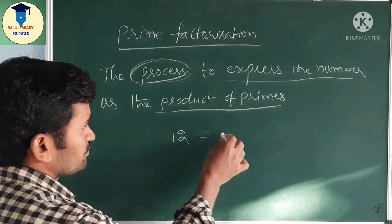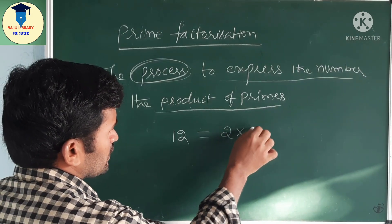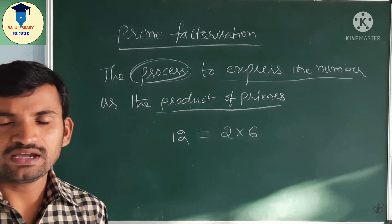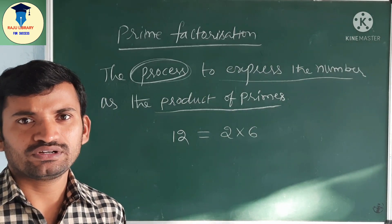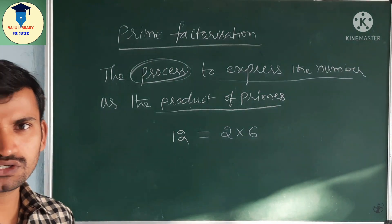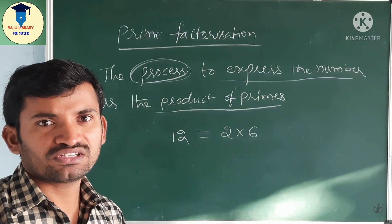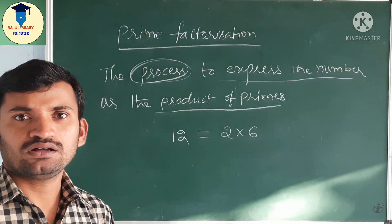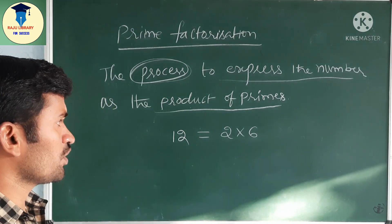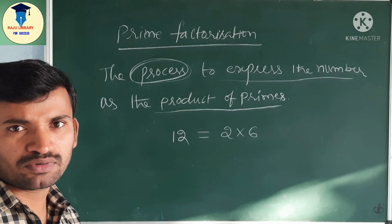So, 12 is there. How can we write this 12? We can write it as 2 × 6 = 12. We start with 2 because 2 is the smallest prime number. That is why we have to start with the smallest prime number only.